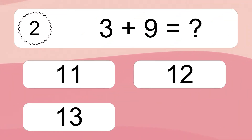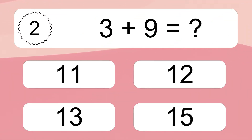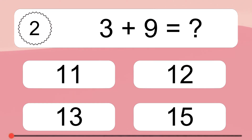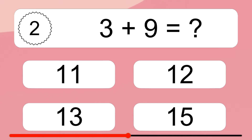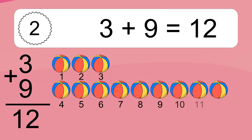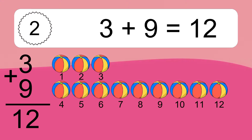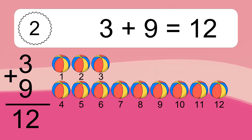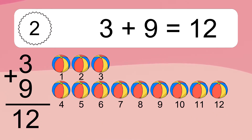3 plus 9 equals what? 3 plus 9 equals 12. Let's count it: 1, 2, 3, 4, 5, 6, 7, 8, 9, 10, 11, 12.